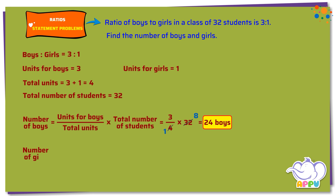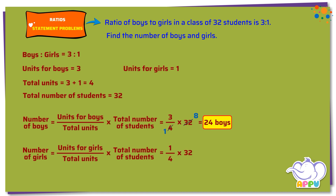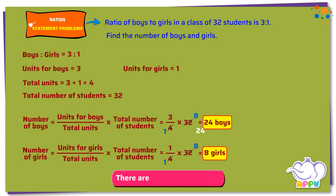Number of girls equals units for girls divided by total units times total number of students, equals 1 by 4 times 32. 4 divides 4 once and 4 divides 32 eight times. This equals 1 times 8 equals 8 girls. So there are 24 boys and 8 girls.